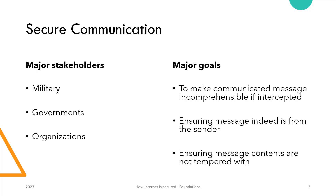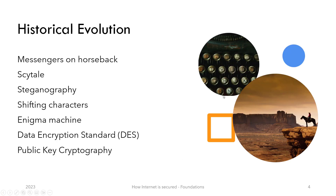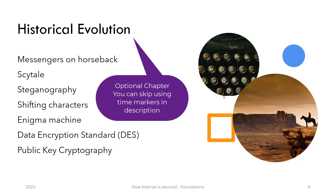As a quick example: if you as a king receive a letter from a friendly neighboring country requesting reinforcement at location A, you would want to ensure the enemy did not read the letter. Secondly, you'd want to ensure the message is indeed from the neighboring country and not the enemy trying to trick you into an ambush — you might examine the king's seal or some other form of authentication. Lastly, you'd want to ensure the contents have not been tampered with.